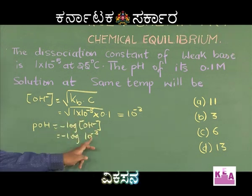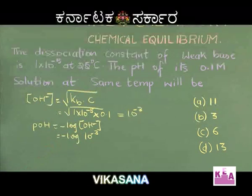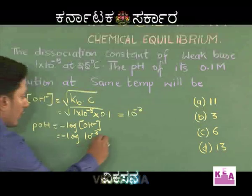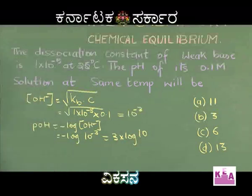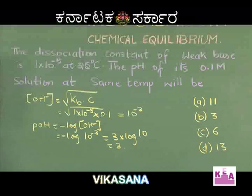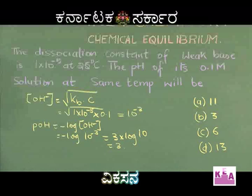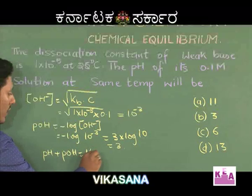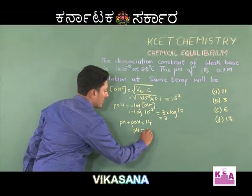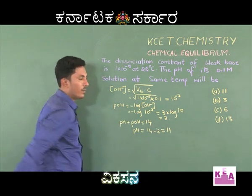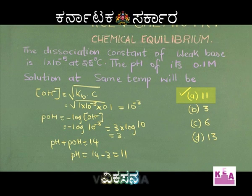pOH = −log(10⁻³) = −(−3)·log(10) = 3 × 1 = 3. They have asked for pH, not pOH. Using pH + pOH = 14, pH = 14 − 3 = 11. Hence option A is the right answer.